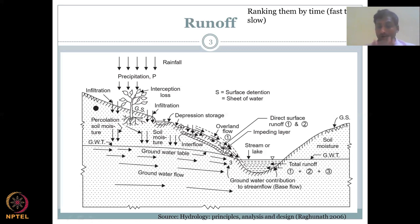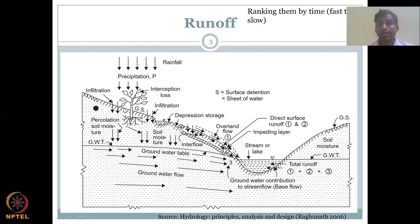What constitutes runoff in your streams and rivers? The first major component is overland flow, where precipitation is converted to rainfall and part of the water gets stored, part goes underground, and part is stored in plants. The remaining water will flow — that is the first component.